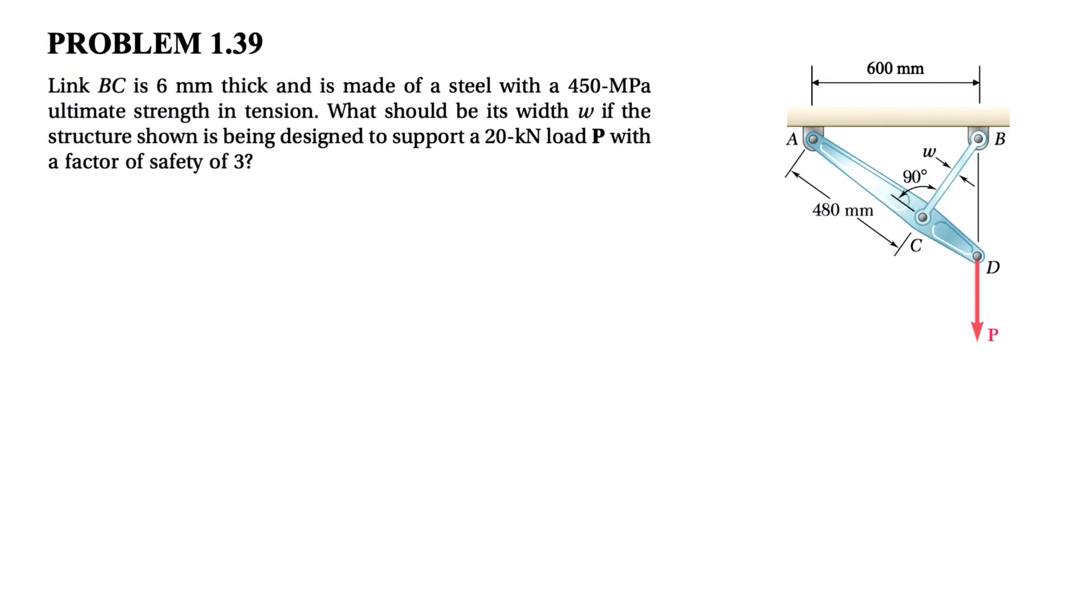All right guys, let's see how we can solve question 39 from the first chapter of the Beard and Johnson textbook, mechanics and materials. We have a link BC that is 6 millimeters thick and is made of steel with 450 MPa ultimate strength in tension. What should be its width W if the structure is being designed to support a 2 kN load P with a factor of safety of 3? So we need to figure out the width of this link BC which is made of steel.